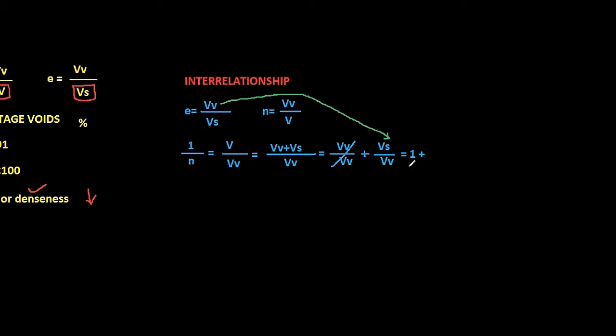So this is nothing but the inverse of void ratio. Now let's rewrite it. We get 1 by E. Now taking the LCM, we get 1 plus E by E. So that means 1 by N is equal to 1 plus E by E, therefore N is equal to E by 1 plus E.